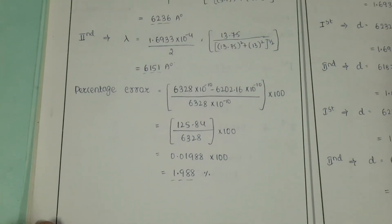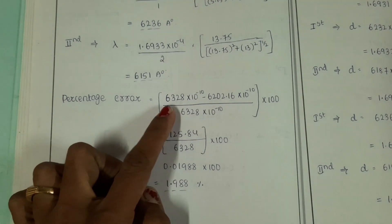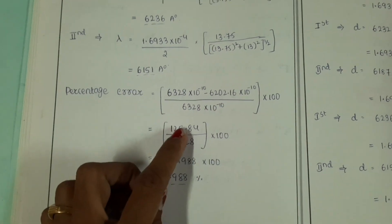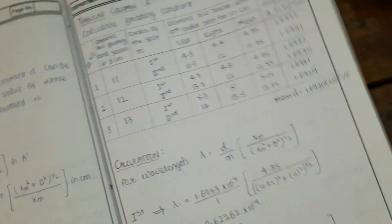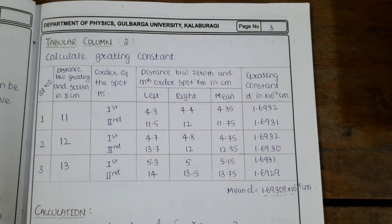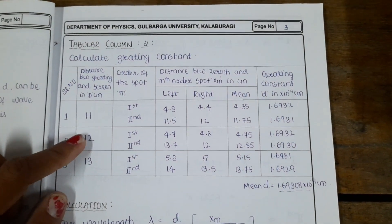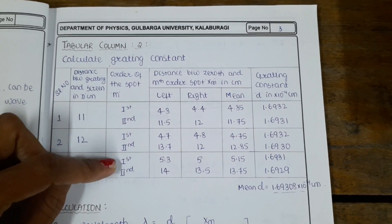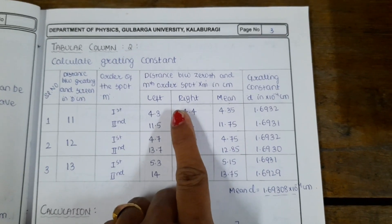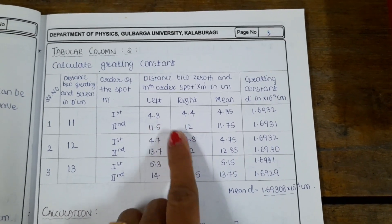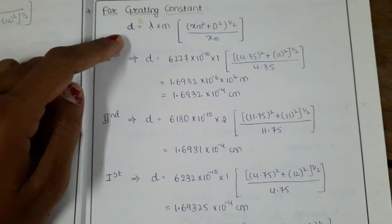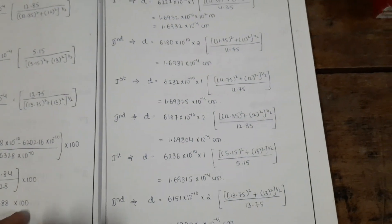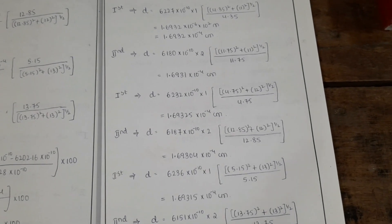Calculate the percentage error in wavelength using the standard value of 6328 Ångström and the average of the three measured values. Then fill in the second tabular column to calculate the grating constant for three different distances — 11, 12, and 13 cm — for first and second orders, noting distances from the zeroth order to first and second orders on left and right, and taking the mean.